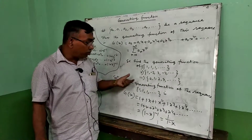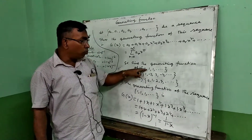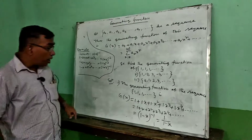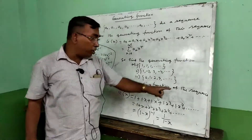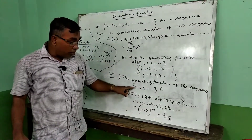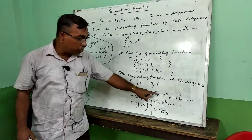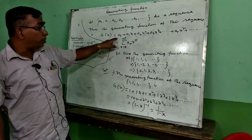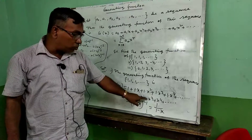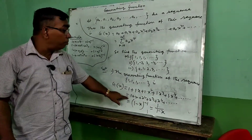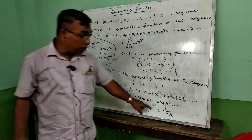Now I am doing some examples. Find the generating function of the sequence 1, 1, 1, 1, ... According to the definition, the generating function is g(x) equal to 1 + 1*x + 1*x² + 1*x³ + ... which simplifies to 1 + x + x² + x³ + ... According to the formula, this equals (1-x)^(-1), that is 1/(1-x).